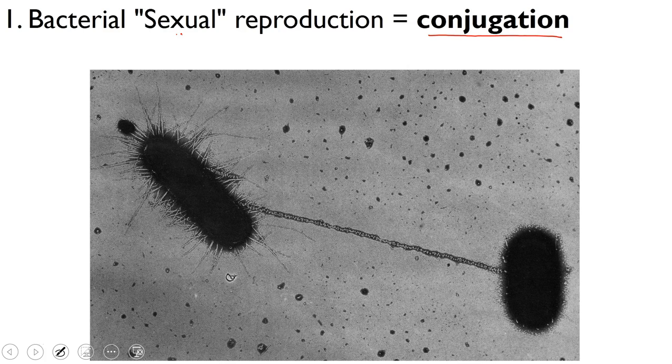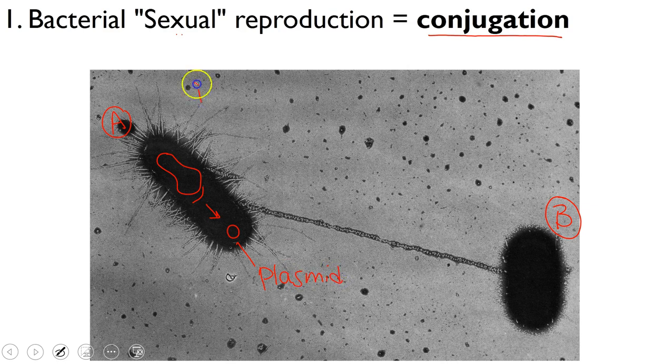So we start with two bacteria, and we'll call them bacteria A and bacteria B. Remember that bacteria have a single circular chromosome. What happens to start is bacteria A makes a copy of part of its chromosome, and that copy winds up onto a small circle called a plasmid. To step one, A copies part of its genes onto a plasmid.